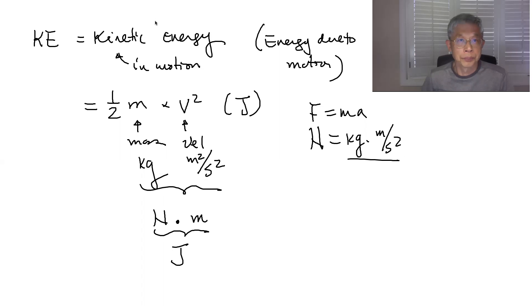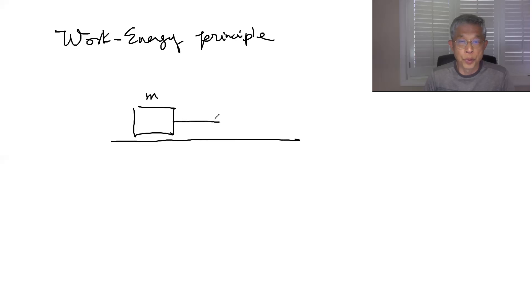So next we're going to talk about a simple version of work energy principle which is used extensively. So let's say if we have a mass and it's given a force that's going this way. And right now the velocity is equal to zero.